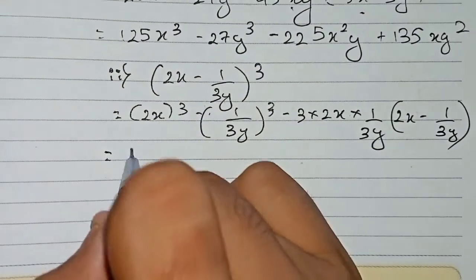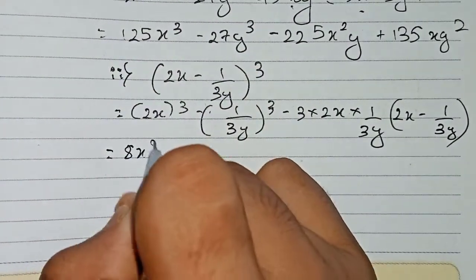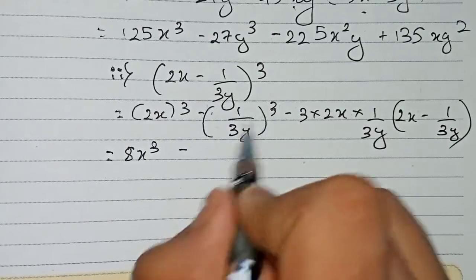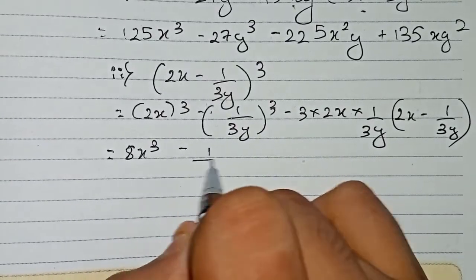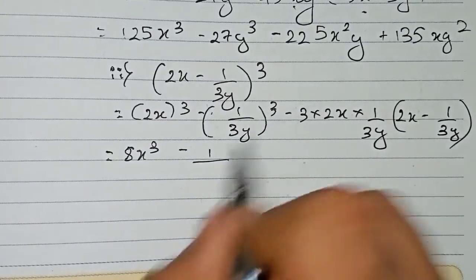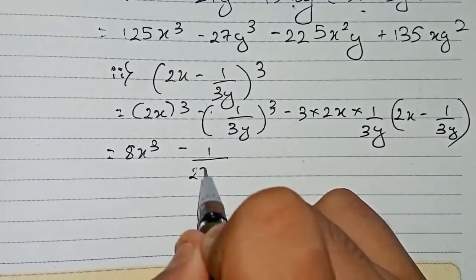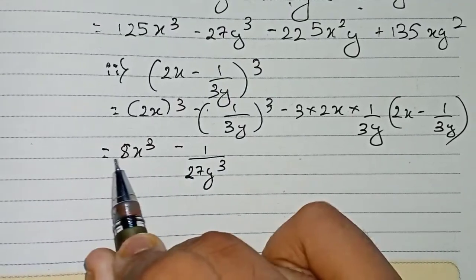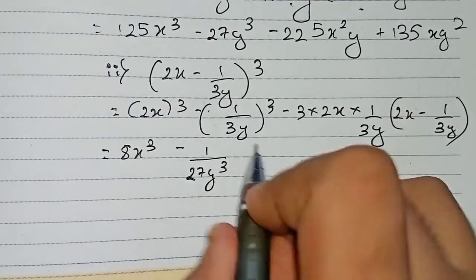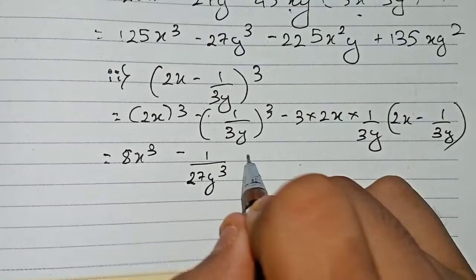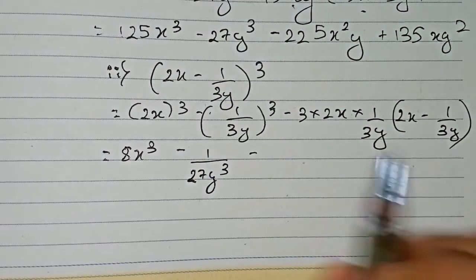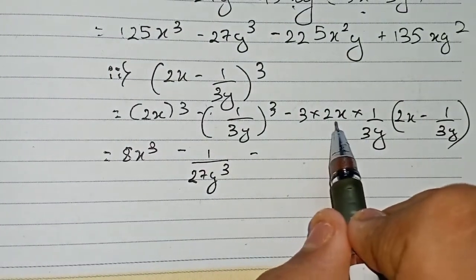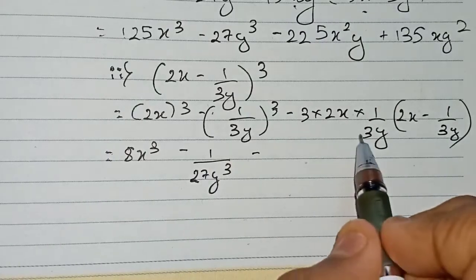Now 2 to the power 3 becomes 8, so we have 8x cube. Then minus sign: 1 to the power 3 is 1 and 3 to the power 3 is 27, giving minus 1 by 27y cube. So so far we have 8x cube minus 1 by 27y cube.